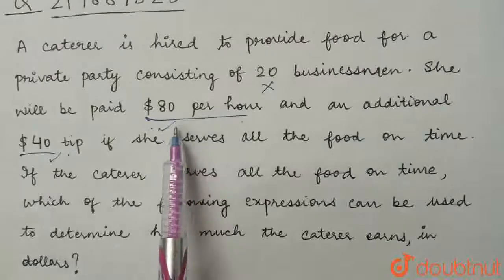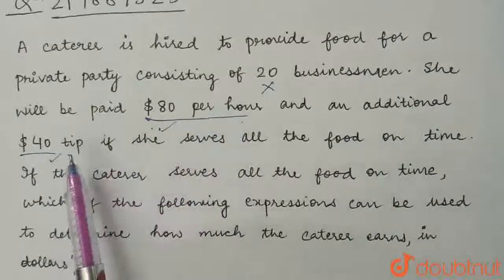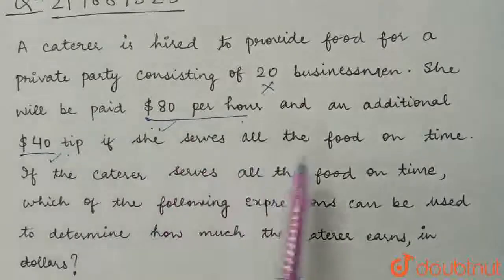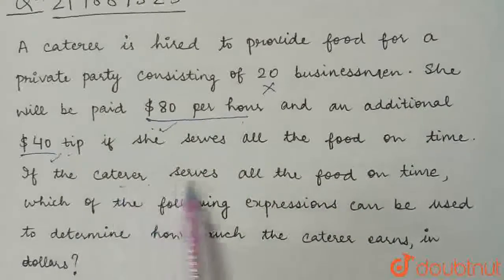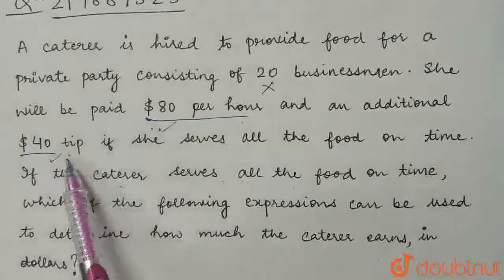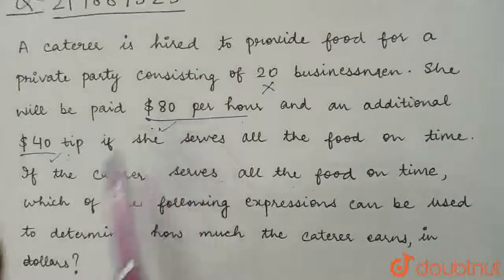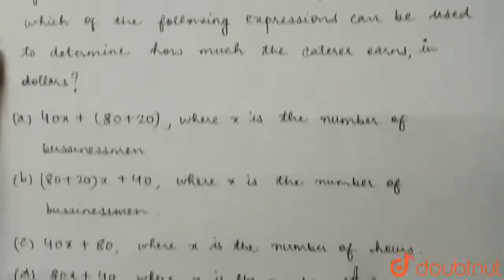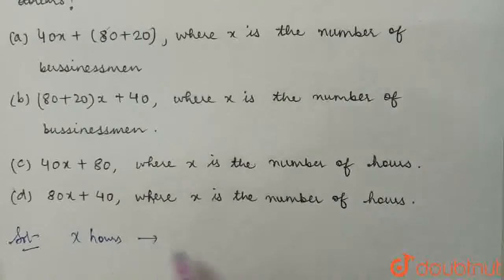She gets $80 per hour and an additional $40 tip if she serves all the food on time, and we are given that she serves all the food on time. So she gets $40 tip and $80 per hour. Now suppose the party goes on for x hours — that is, x hours total time for the party.